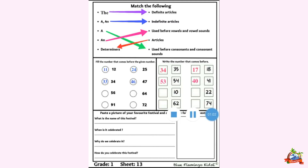'A' is used before consonants and consonant sounds. So we will match it with the same. The three articles are 'a', 'an', and 'the'.